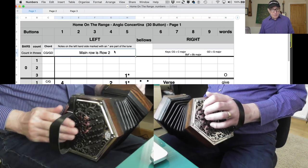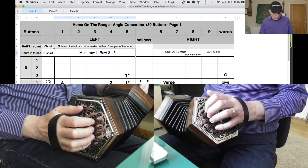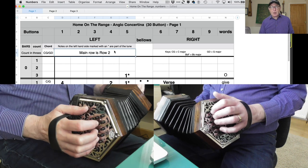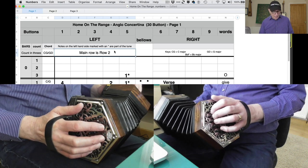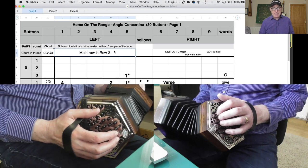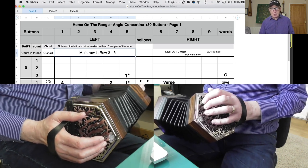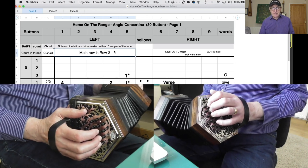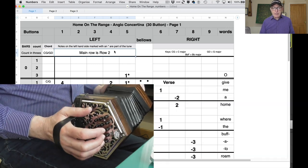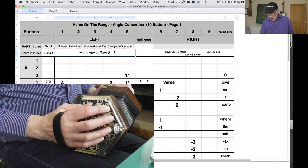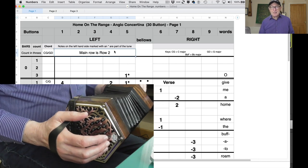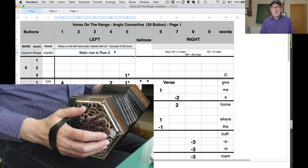It says that the main row is two, so your main tune row is the middle row of this 30 button instrument. If you've got more than 30 buttons, just ignore those extra ones at the ends. And if you've only got a 20 button instrument, sadly you won't be able to play this tune because you do need the full 30 buttons. You need the notes on the accidental row. This will be the same for Wheatstone and Jefferies because there's nothing on the right hand side on the accidental row, so for once that's pretty straightforward.